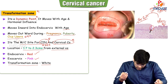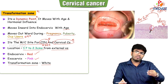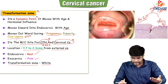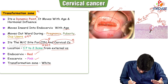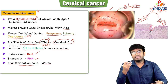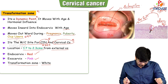Usually during per-vaginal examination, you are not supposed to see the endocervix because it is more inside. But in this image, you can see that the endocervix is a bit towards outside — this condition is known as ectropion. Ectropion means the endocervix is getting exposed to the outside. This is not a dangerous condition; it can happen even during pregnancy.